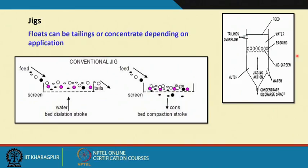You control it by controlling this water flow rate. This also helps ensure that if any small tailing particle passes through the aperture, it will be sent back due to the upward velocity of water, so lighter particles do not contaminate the concentrate. When the heavier particles settle down, they are collected through the concentrate discharge spigot. In simpler terms, this is how a jig works, but it is a little bit complex to control all the parameters to perfect the separation.